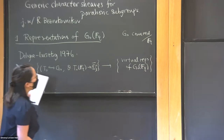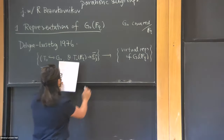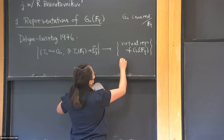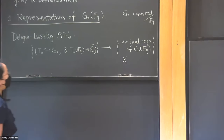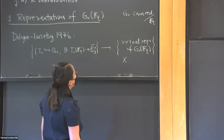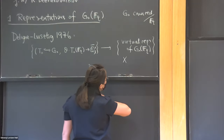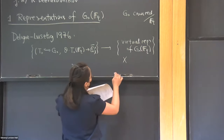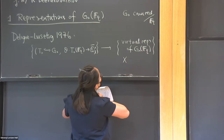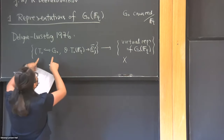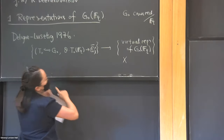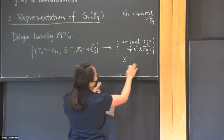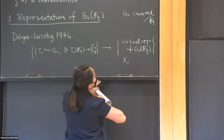The recipe goes as follows. What Deligne and Lusztig construct is a variety X — it's very close to being a subvariety of the flag variety. This X is special in that it has two commuting actions: one of your original group and one of the torus that you chose. So for each such pair, we get an X; I'll put the zero subscript here. There's an action of G_0(F_q) and also an action of T_0(F_q).